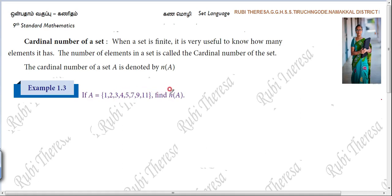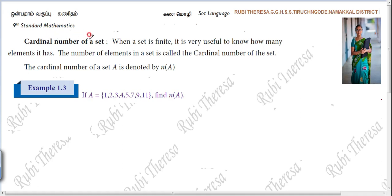find N of A. What is meant by N of A? N of A — you have to see the cardinal number of a set. Cardinal number of a set — so this is the definition for the cardinal number of a set.